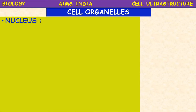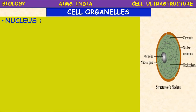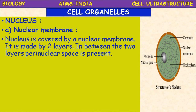A cell is the basic structural and functional unit of all living organisms. The nucleus was discovered by Robert Brown. It is the most prominent organelle, present in the center of the cell. It consists of nuclear envelope, nucleolus, nuclear pores, and chromatin material.